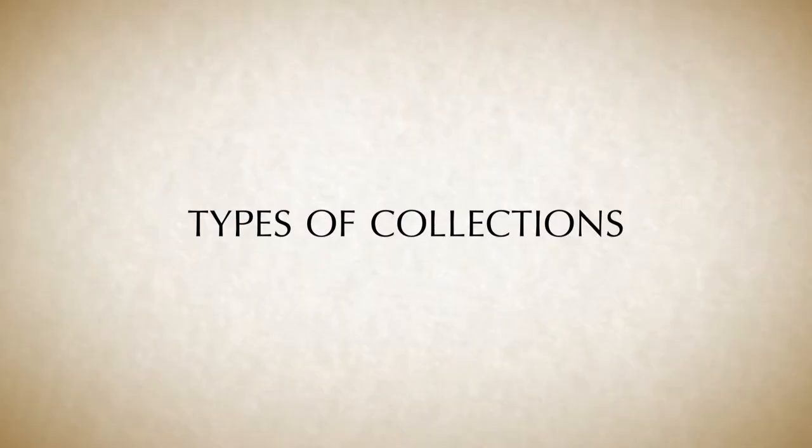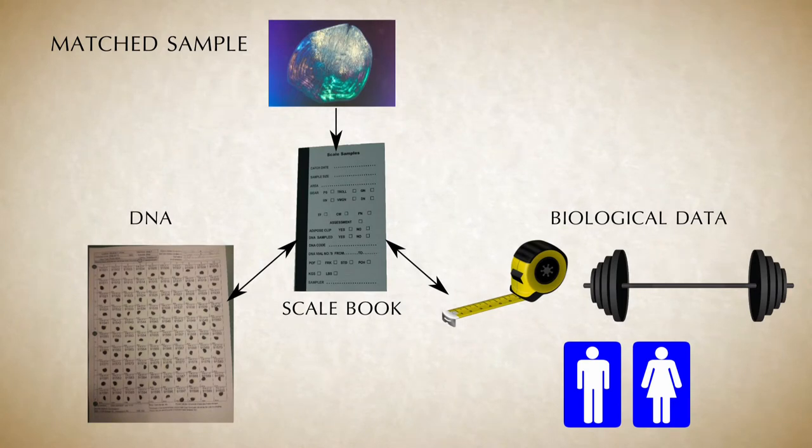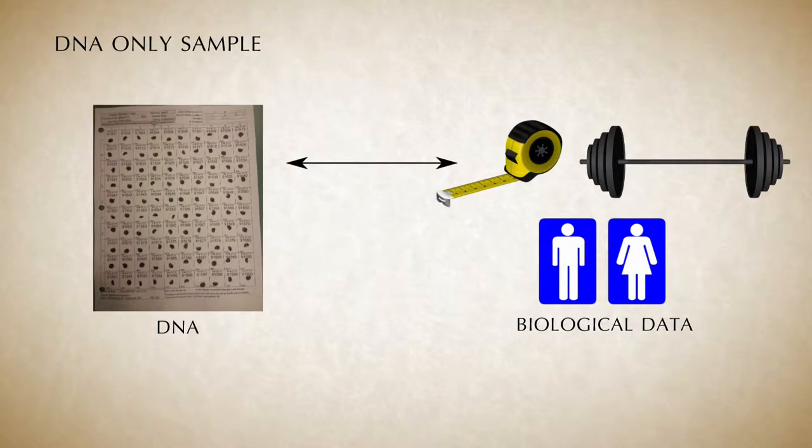Biological sampling does not always need to include matching scales and DNA, and in some cases it may be best to use other sample collection types that are less informative, but faster and easier to collect. For example, sometimes a DNA-only sample could be collected, which consists of DNA and matching biological data without any scales.